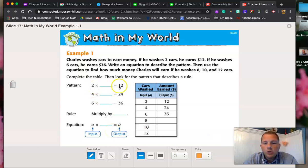What times 2 is going to give me 12? Well, I know that 12 divided by 2 is 6. So 6 times 2 is 12. And I know that 24 divided by 4 is going to give me 6. So 4 times 6 is 24. And going on, 6 times what is going to give me 36? Yeah, 6.